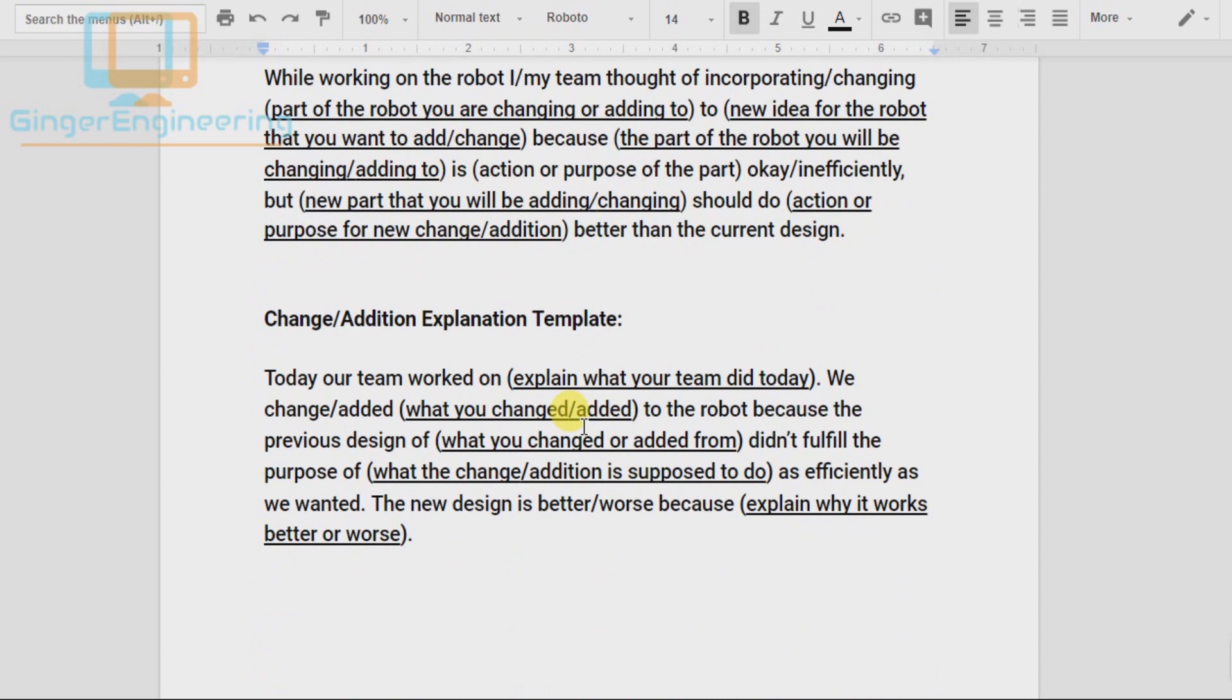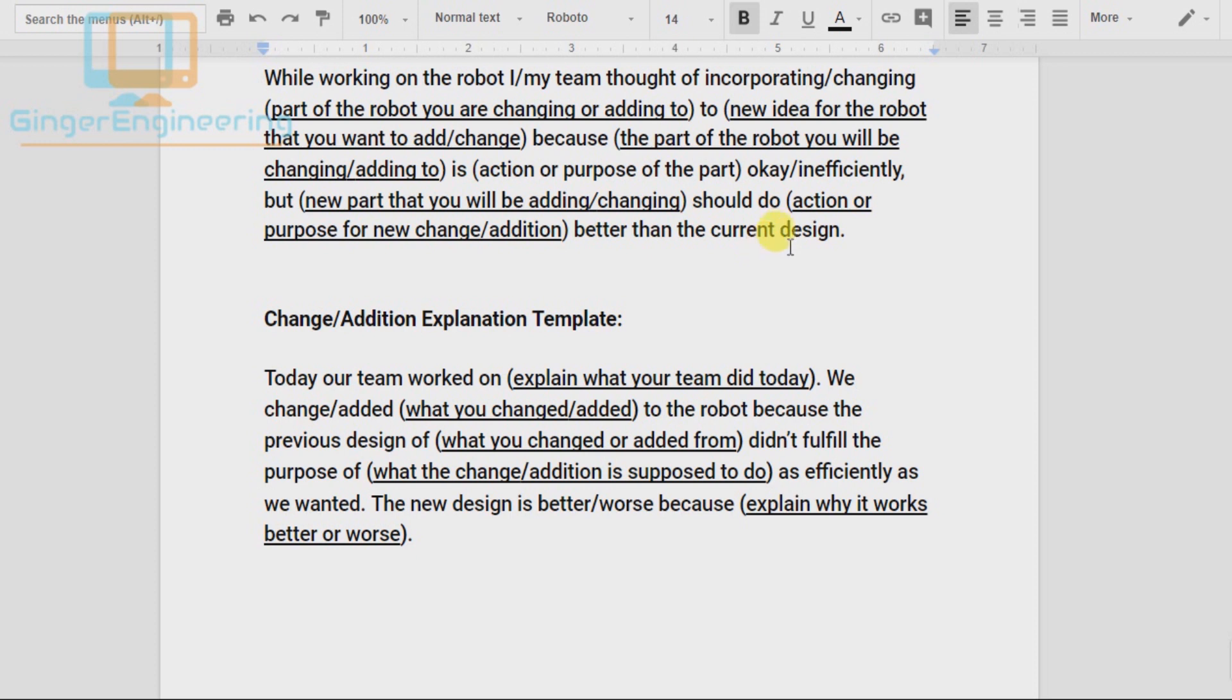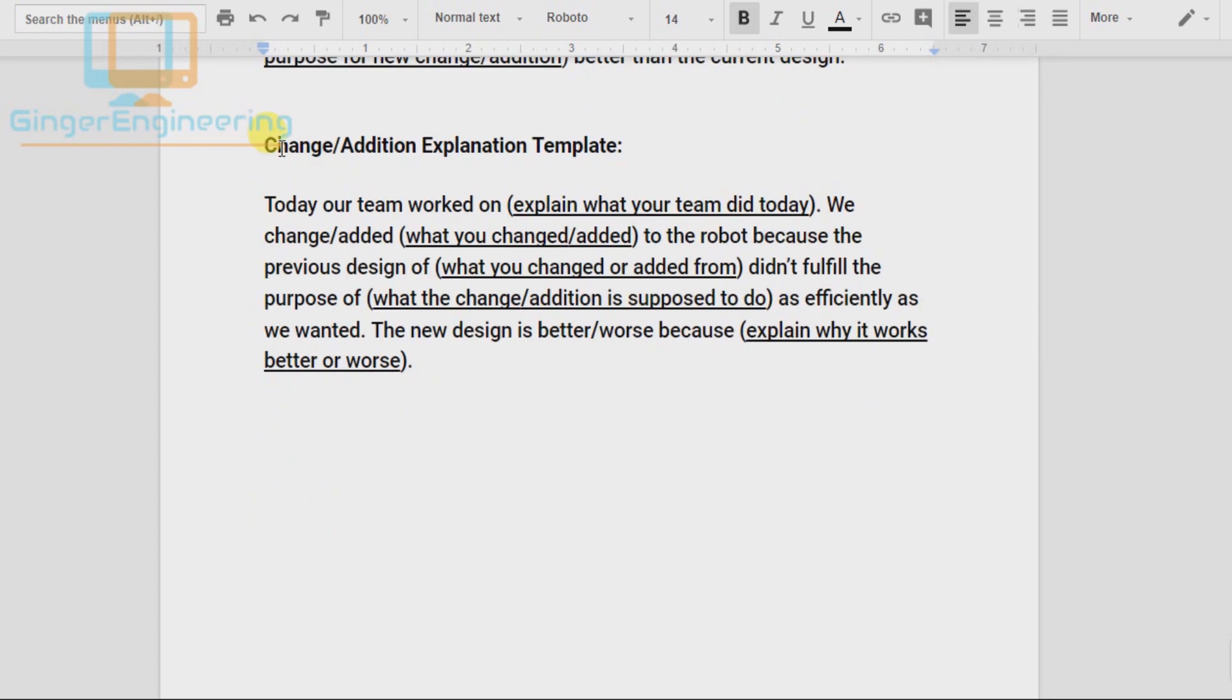Next, you write down the materials you'll be using and the procedure you plan to take. If you changed or added something to the robot, you'll write down, today our team worked on and then describe what you did that day, and then write,